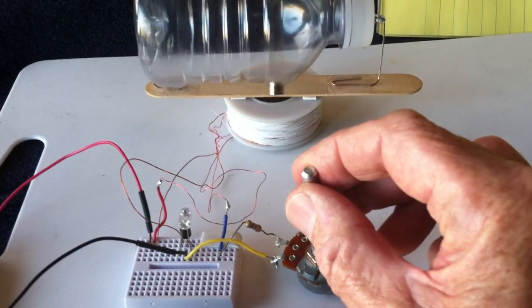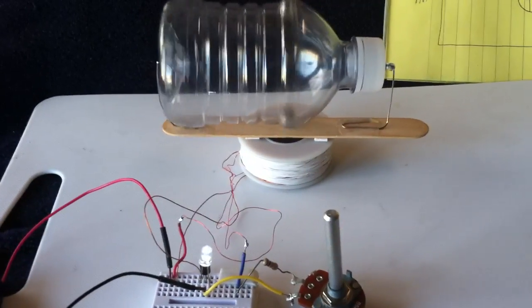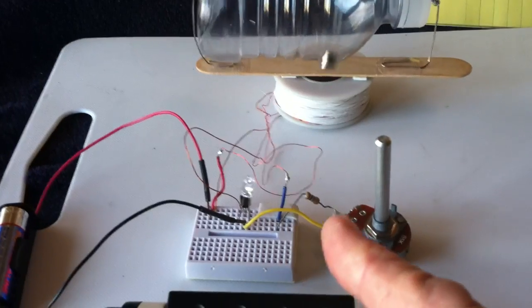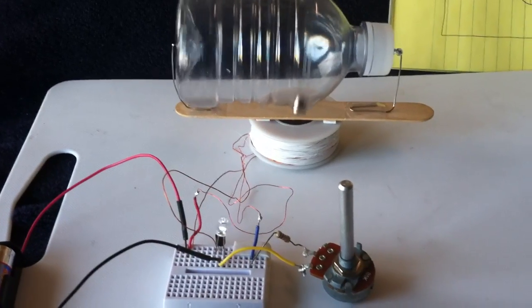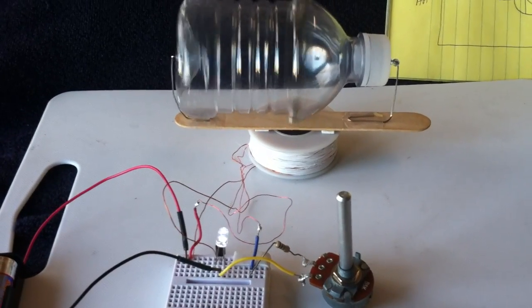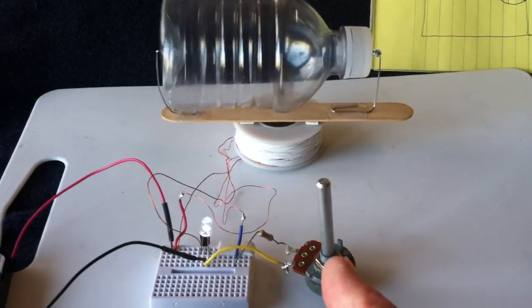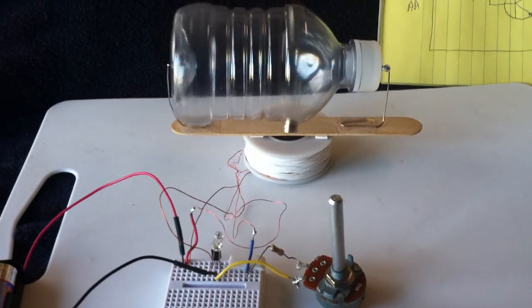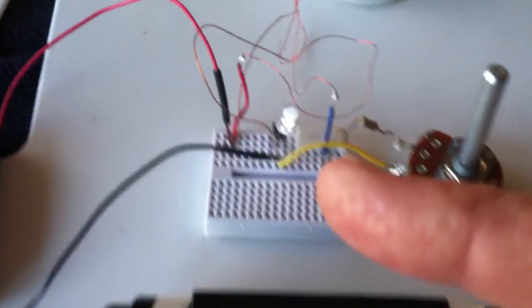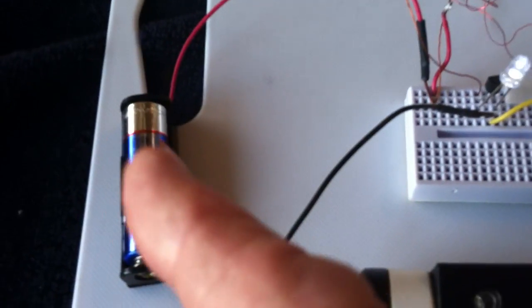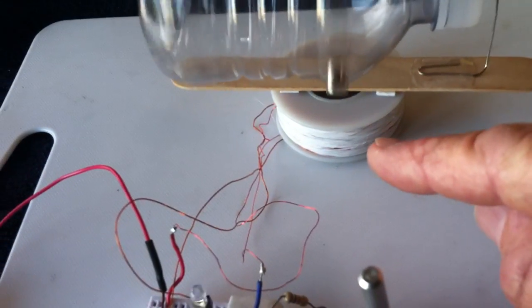Maybe not. Once this revs up, you can adjust the potentiometer to control your speed. Once it gets up to speed, then you do have some speed control with your potentiometer. This is all running out of a double A battery. You notice the LED is blinking just like a jewel thief—it's not blinking off the battery, it's blinking off of the collapsing field of the drive coil.